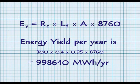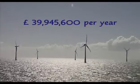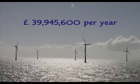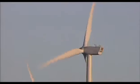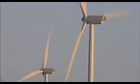Putting this figure into economic terms, we take the 998,640 megawatt hours per year and multiply it by the wholesale price of electricity at that point in time, giving us a revenue generated from the wind farm of 39,945,600 pounds. In this example we come to a revenue figure of just under 40 million pounds for one year. This has to be extrapolated over the lifetime of a project, which is typically 25 years, and this determines whether the project will be viable or not.